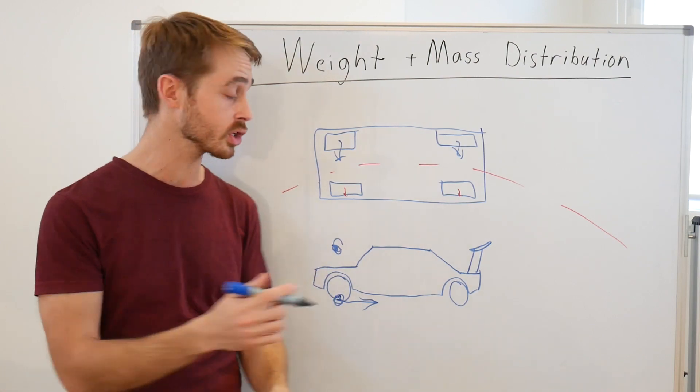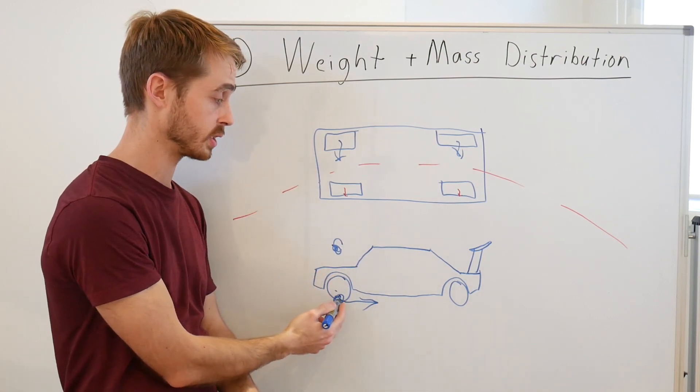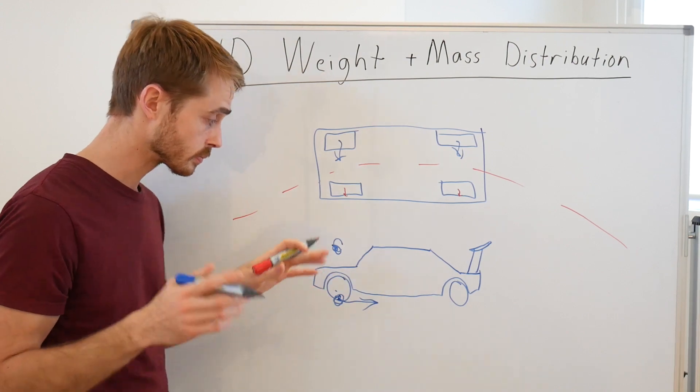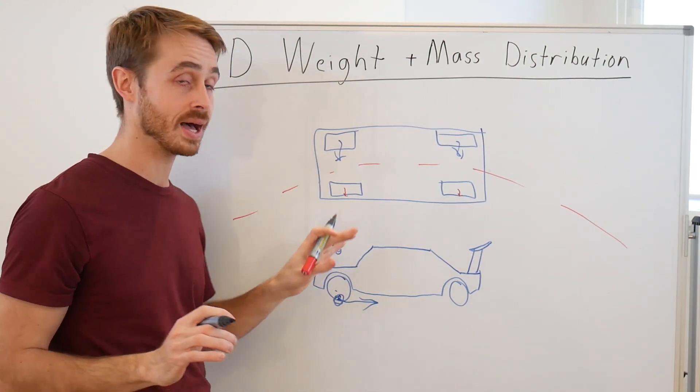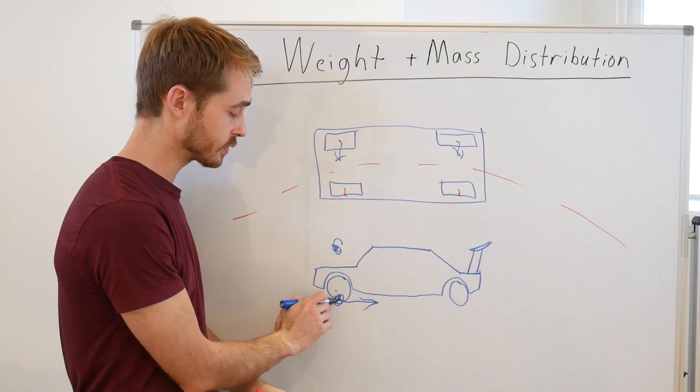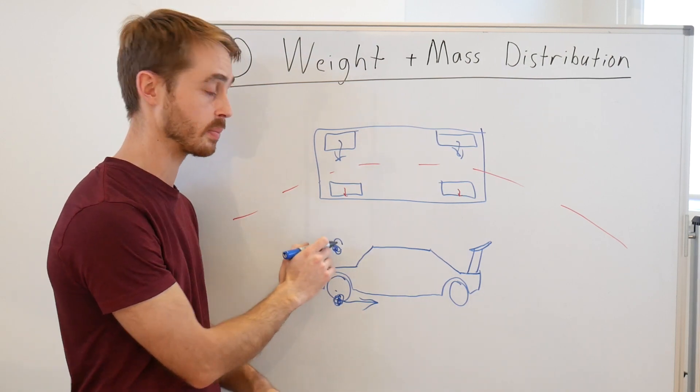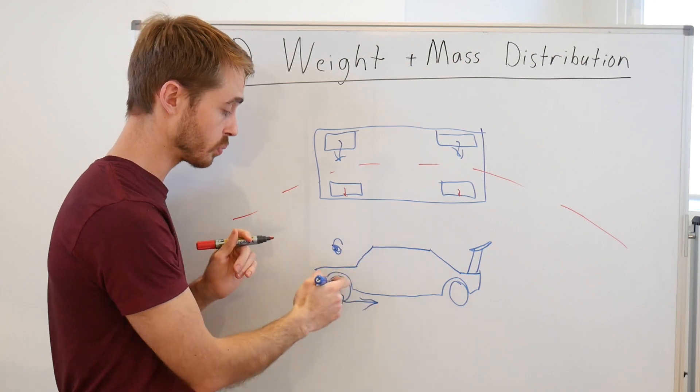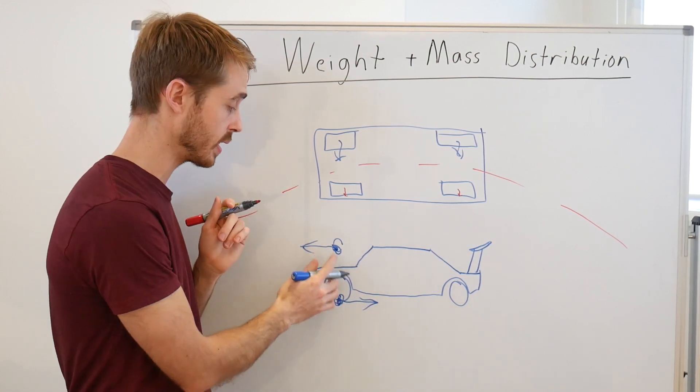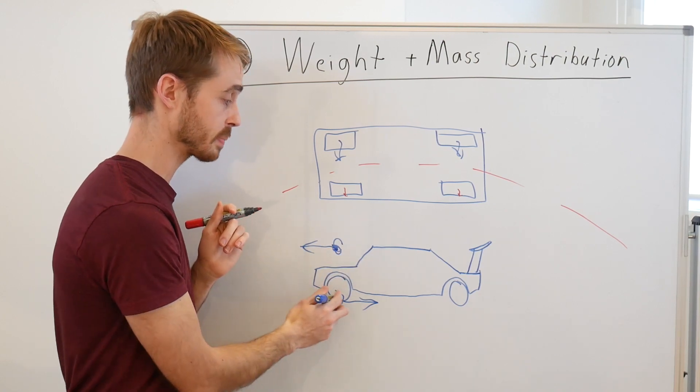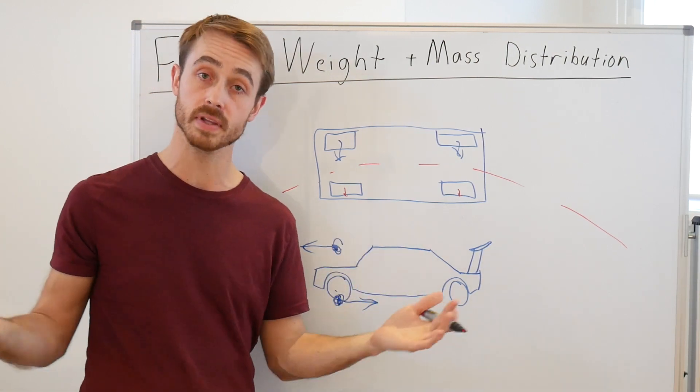So theoretically anyway, for acceleration you'd want 100% weight distribution forwards. There becomes a slight problem though, because the second you start to brake, your center of gravity is of course not at the contact patch, it is somewhere up here. And so what happens is that as you brake, you decelerate, you get a force from the center of mass decelerating, you get a torque around the contact patch, and of course your car will try to flip itself.